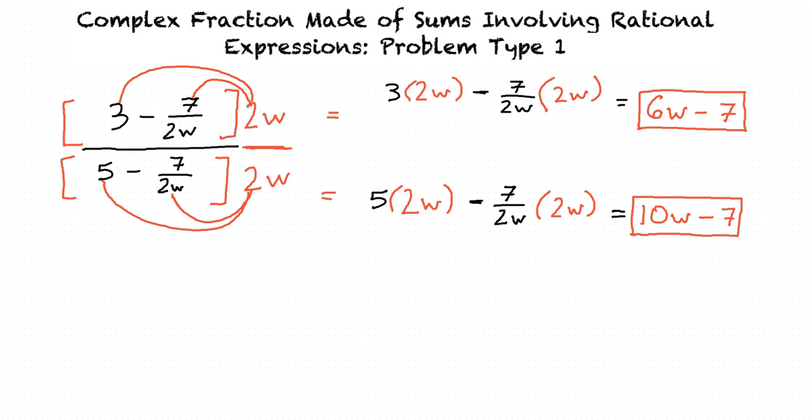At this point, I see that we have 6w minus 7 over 10w minus 7. Is there anything else we can do to simplify this? No, there isn't. This is our final answer.